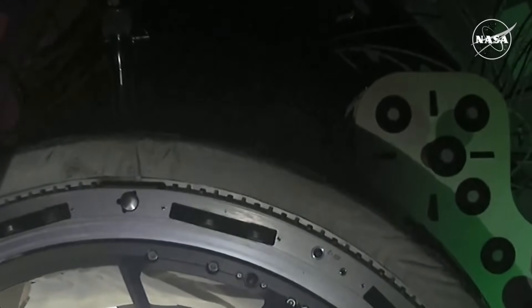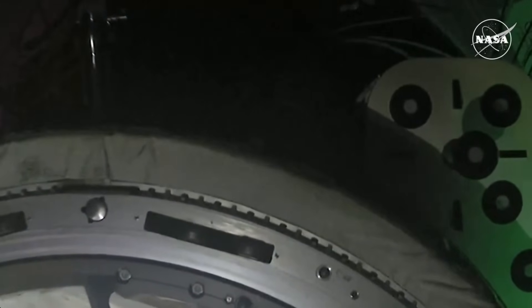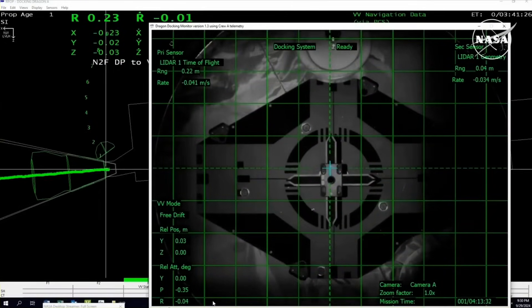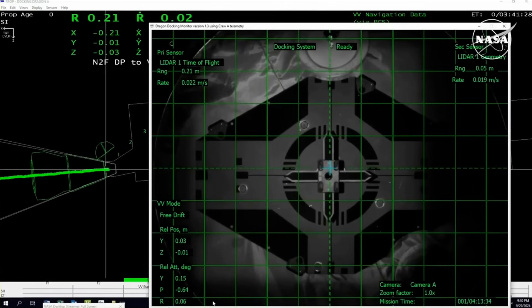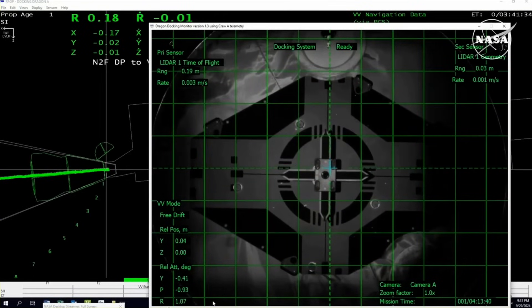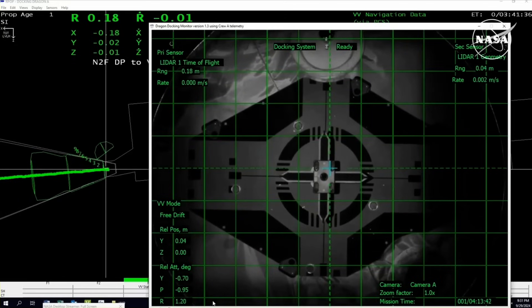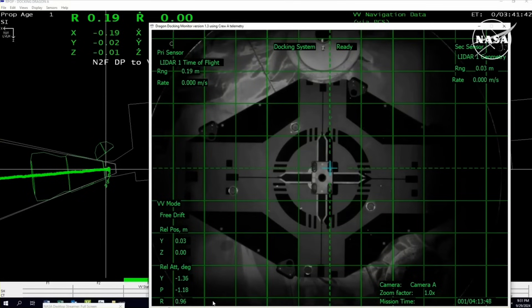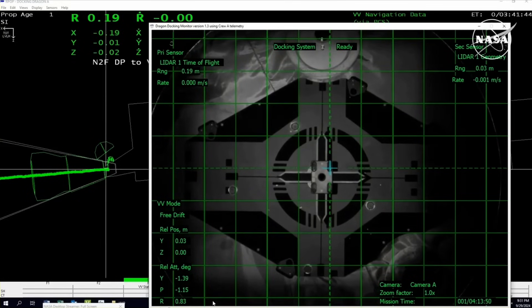One meter. Freedom, SpaceX on the big loop, soft capture confirmed. Crew 9 has arrived to the International Space Station, docking confirmed at 4:30 p.m. Central Time, 5:30 p.m. Eastern Time over Botswana.